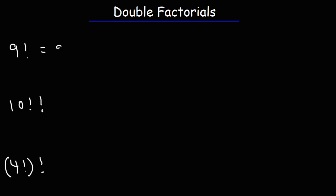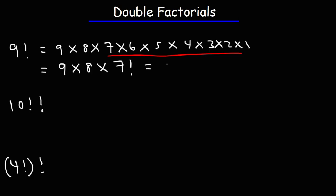This is going to be 9 times 8 times 7 times 6 times 5 times 4, all the way to 1. This is going to equal 9 times 8, and then everything else, we can replace that with 7 factorial.